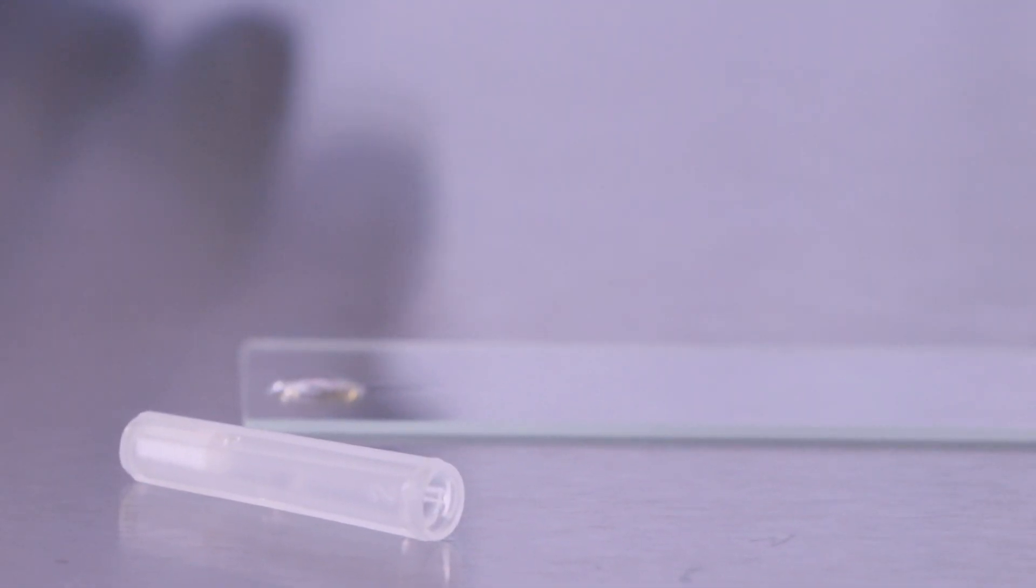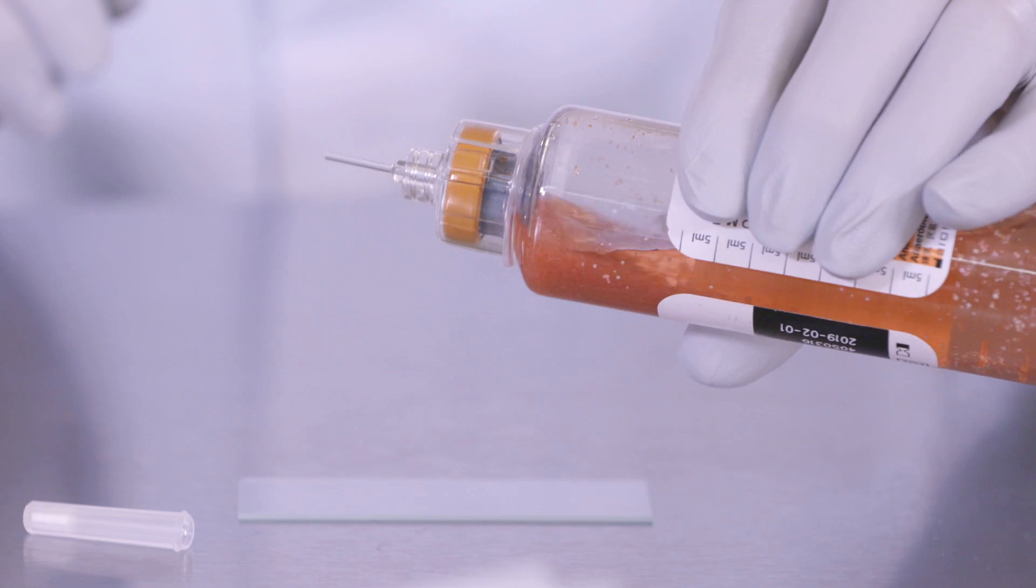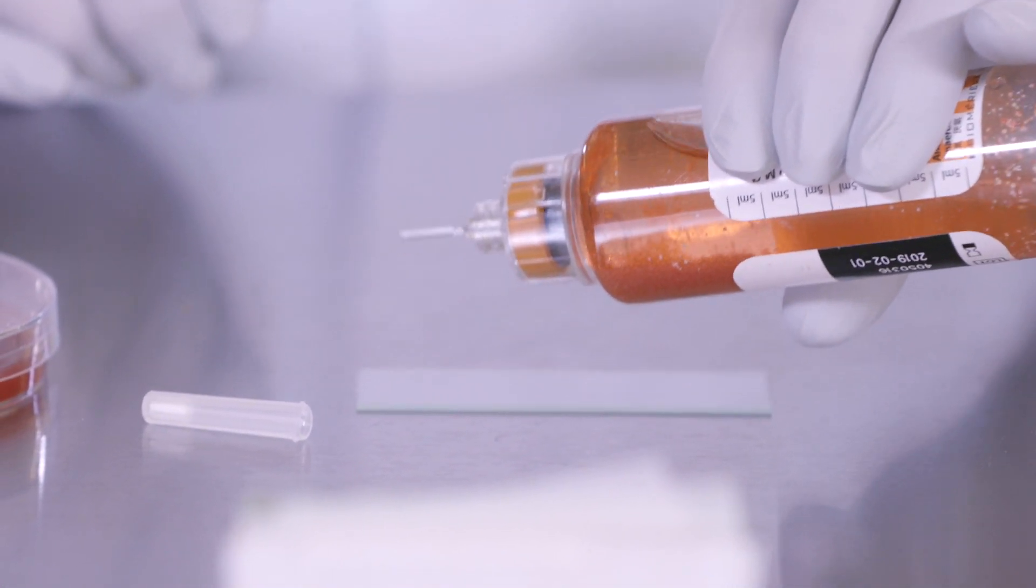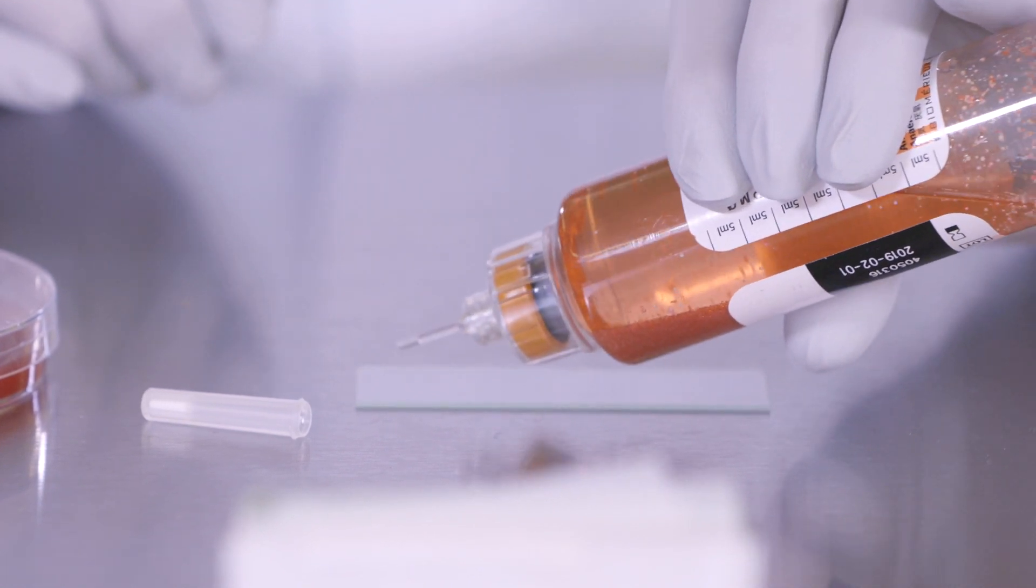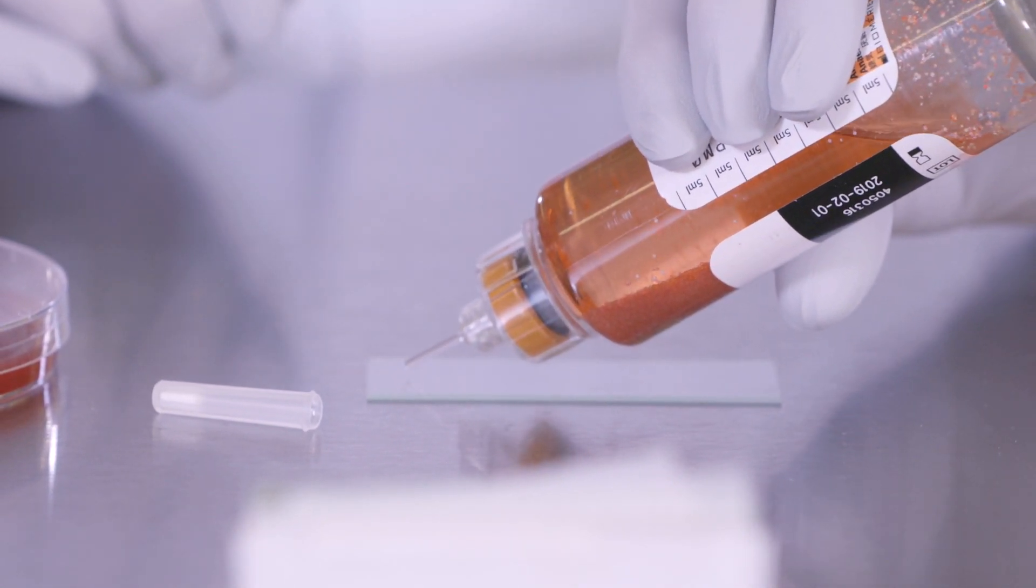If beads do obstruct the tip, this could interfere with dispensing drops. If resin beads obstruct the tip, tilt the bottle back and forth to move the resin beads away from the piercing tip. Allow resin beads to settle and resume dispensing sample drops.